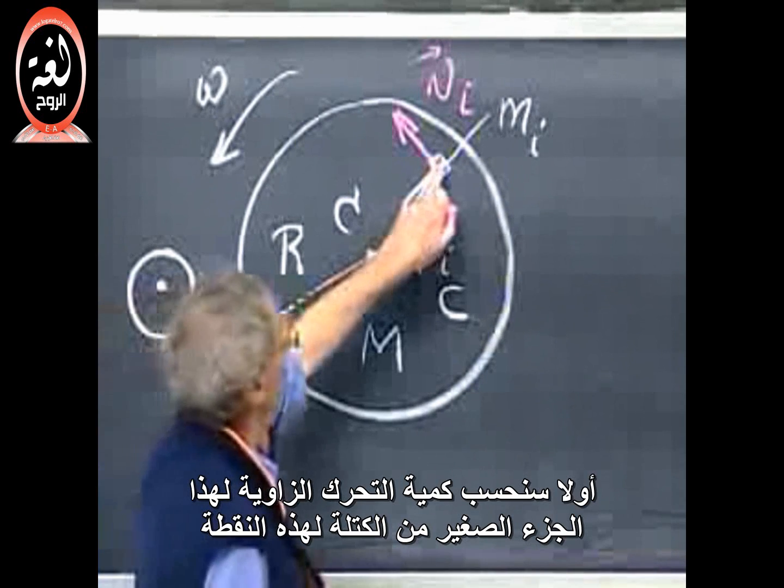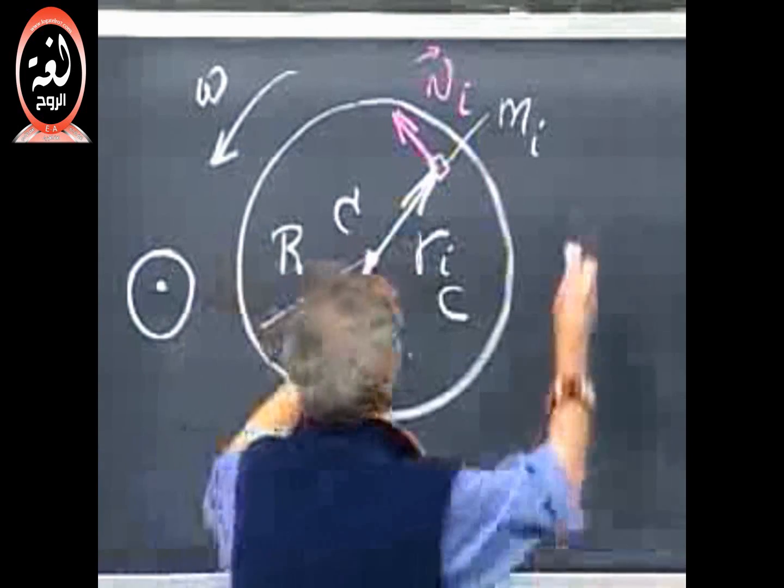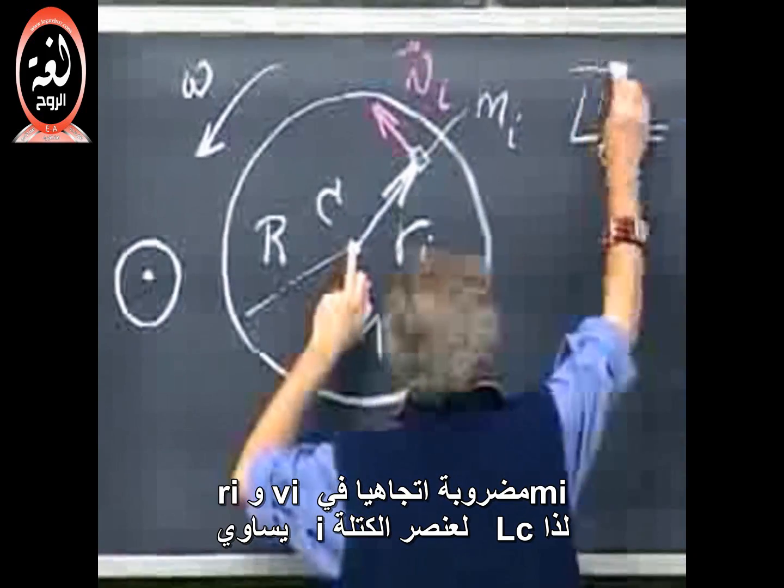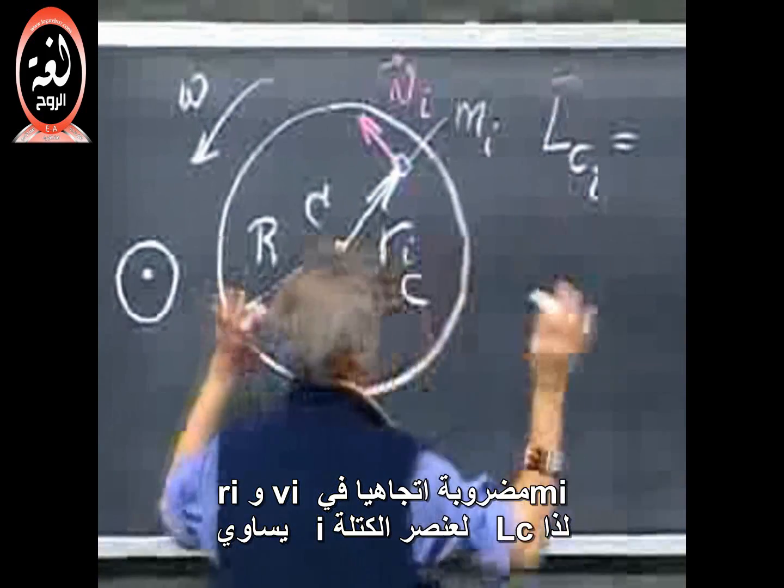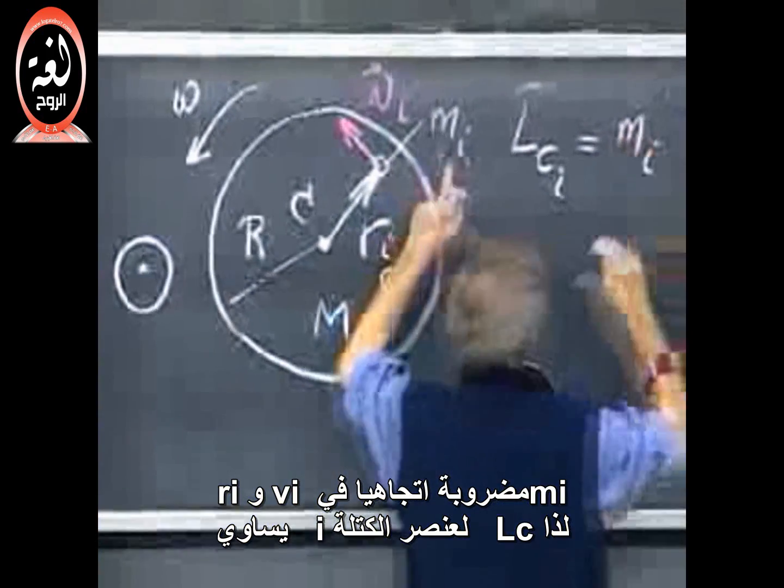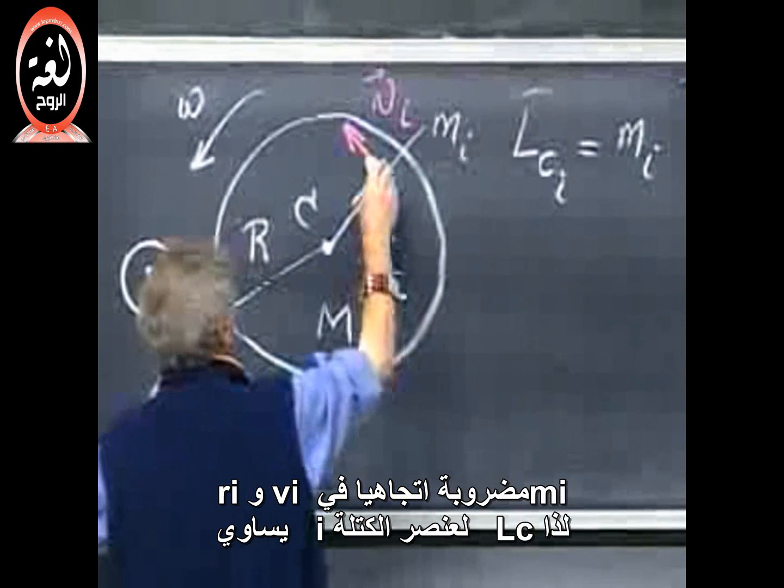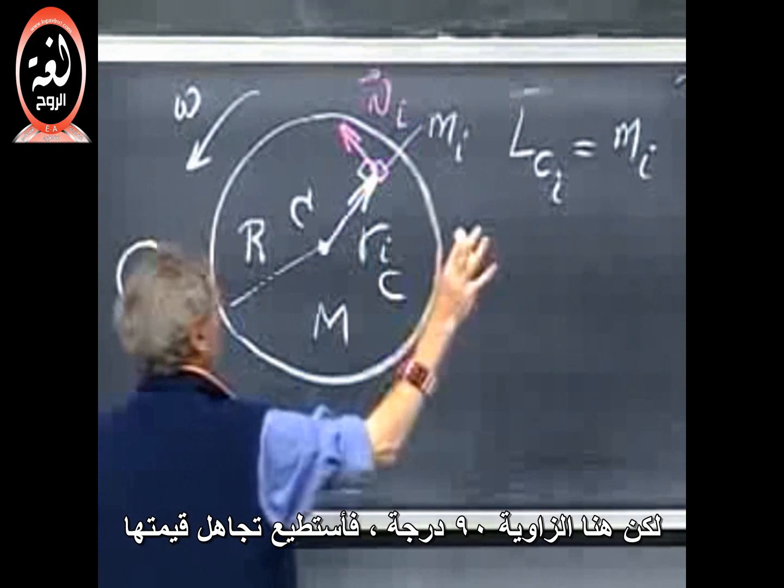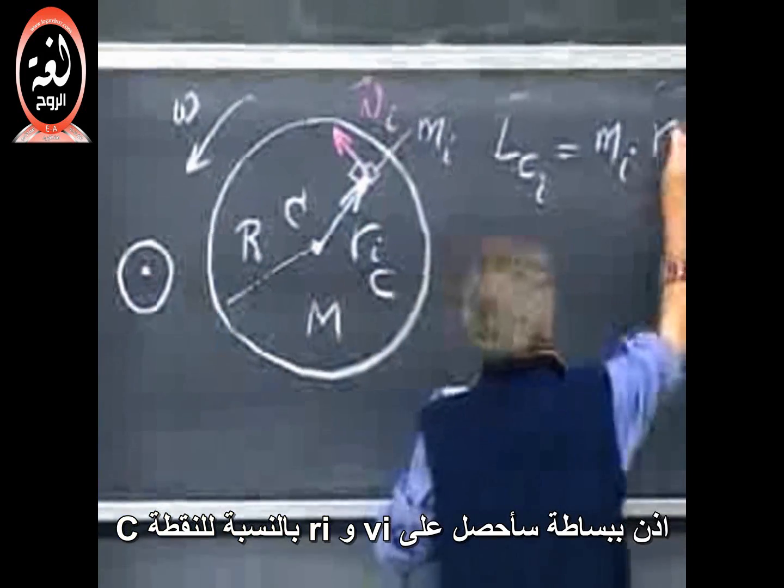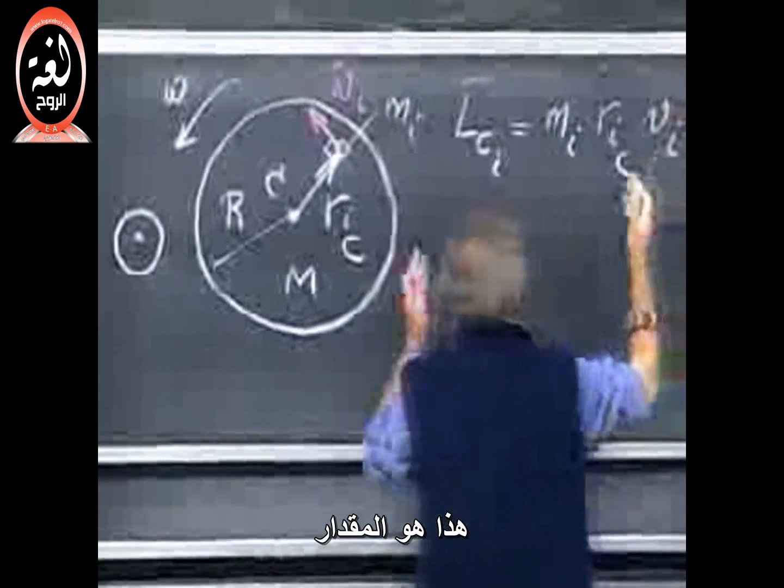Well, let's first calculate what the angular momentum is of this little mass element about this point. So L of C for mass element i equals—oh, let's just only worry about magnitude because we already know the direction. So that is M of i times the cross product between R of i and V of i. But this angle is 90 degrees, so I can forget about the sine of theta. So I simply get R of i V of i, R of i relative to that point C times V of i. This is the magnitude.